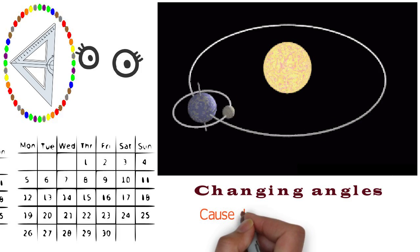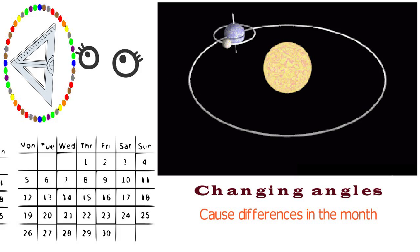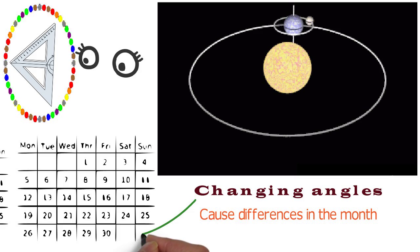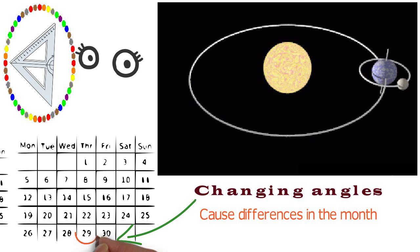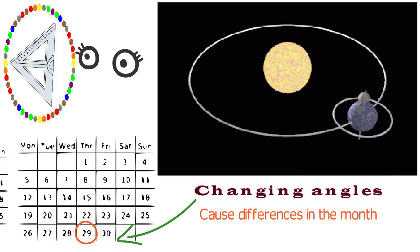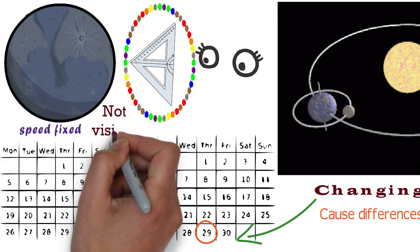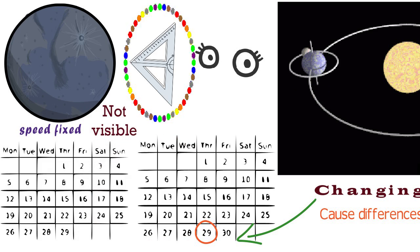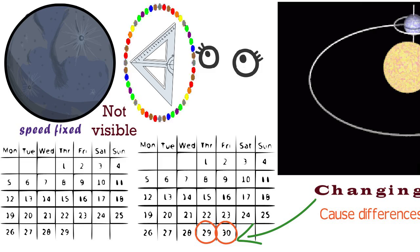These changes in the angle cause the difference in the month. Because of these changing angles, sometimes on the 29th day or the end of the 29th day, the moon cannot be visible whatever one may do. You have to wait another day so that the angle comes in the right place.